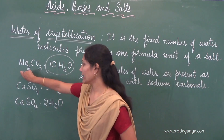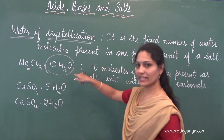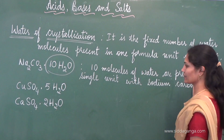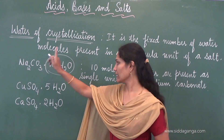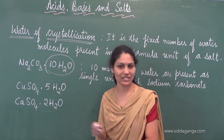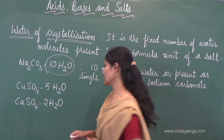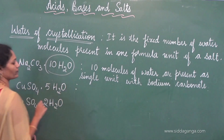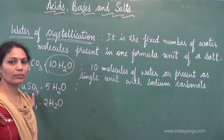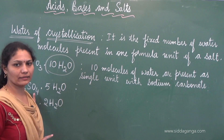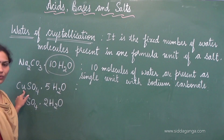To repeat: Na2CO3·10H2O indicates that 10 molecules of water are present as a single unit with sodium carbonate — 10 molecules of water as water of crystallization. CuSO4·5H2O — how do we pronounce it? It is pronounced as pentahydrated copper sulfate, or blue vitriol. It looks blue. Penta means 5 — pentahydrated. CuSO4 is copper sulfate. 5 molecules of water are present as a single unit with copper sulfate.